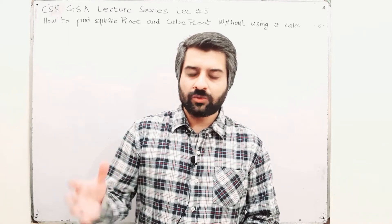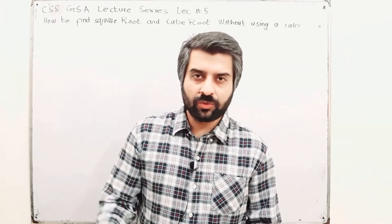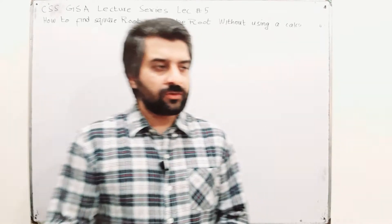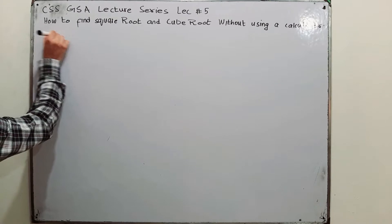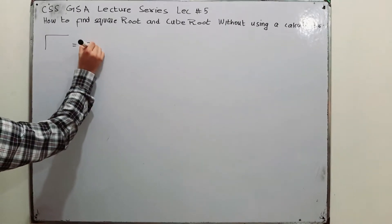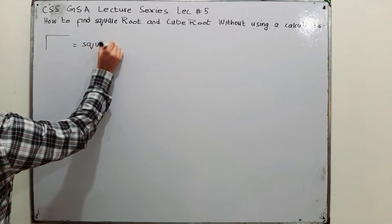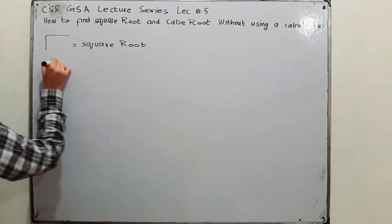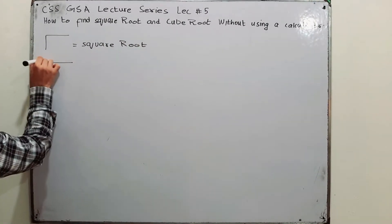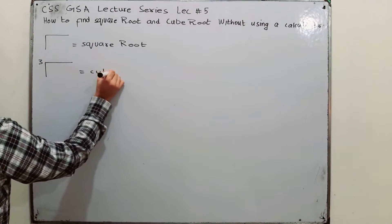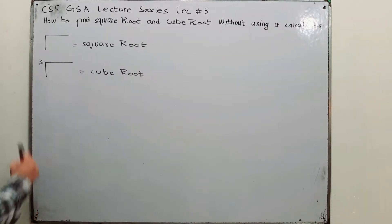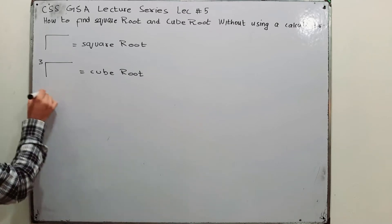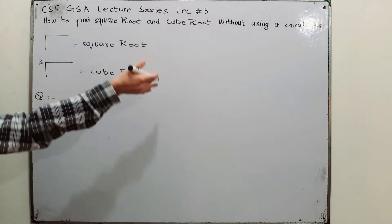So how to find a square root and cube root without a calculator. First of all, the symbol used to represent a square root is like this — this represents a square root. And the cube root is represented by this symbol — this is the symbol for cube root.